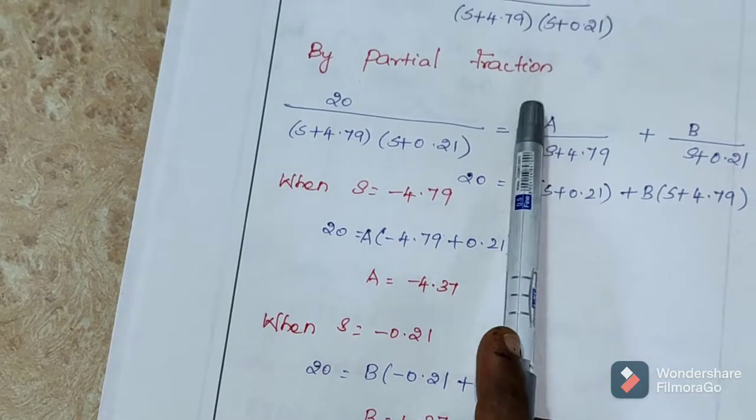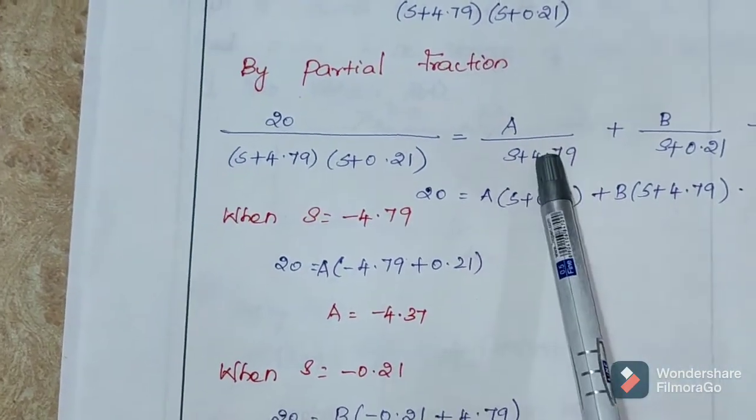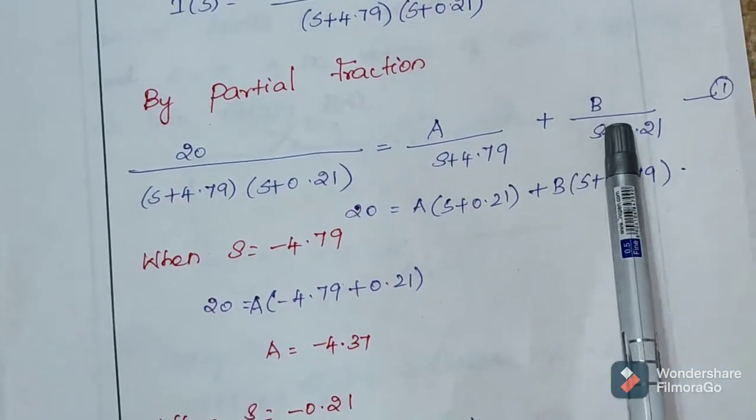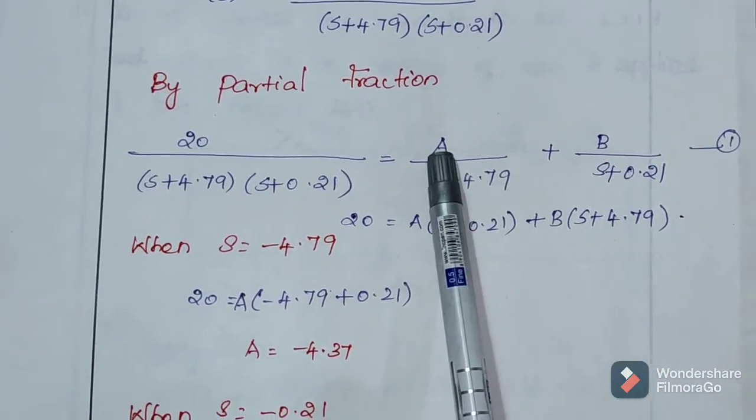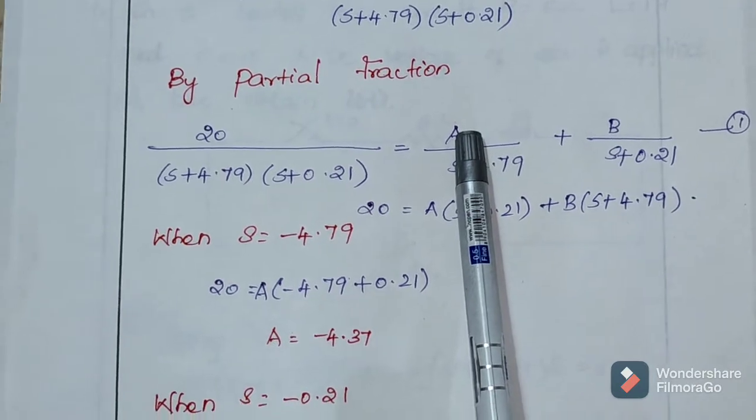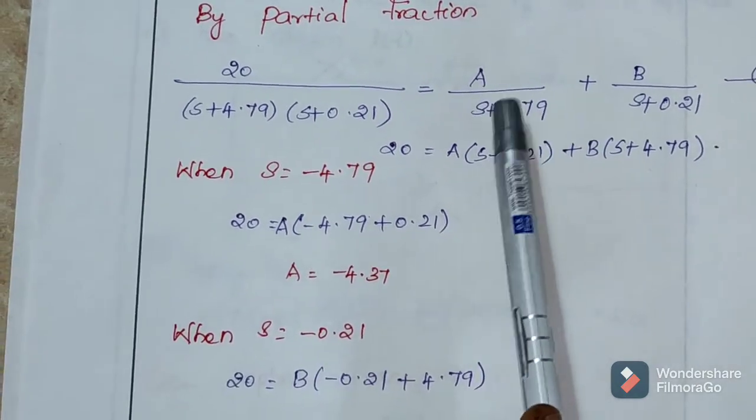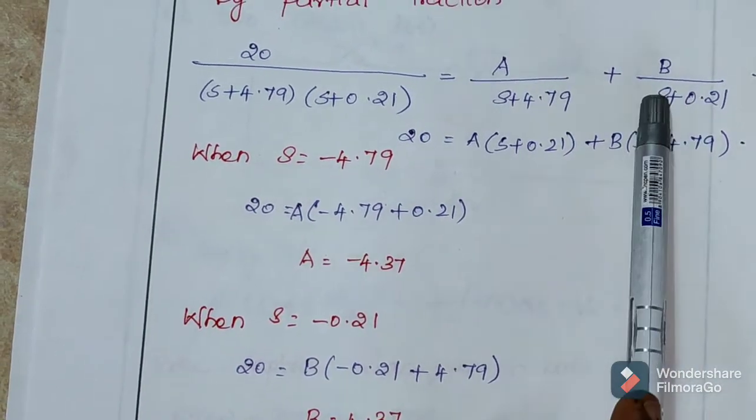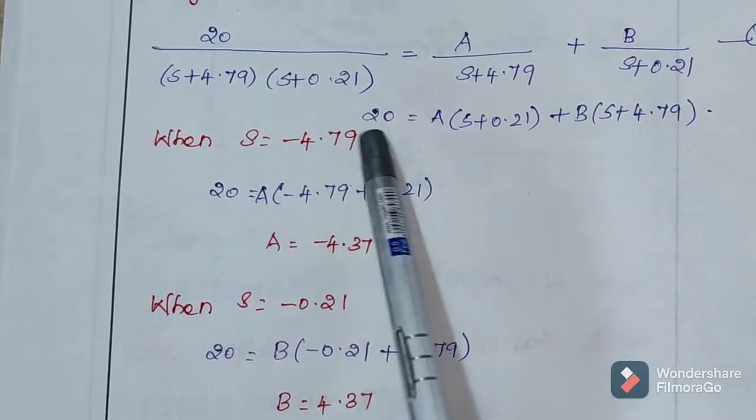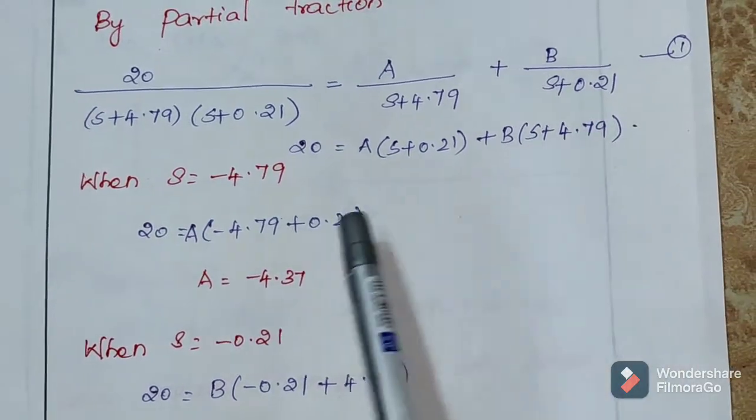Partial fraction: A by s plus 4.79 plus B by s plus 0.21. Consider this is equation number 1. Now, take LCM. LCM: A into s plus 0.21 plus B into s plus 4.79, whole divided by these two terms. On the denominator, the denominator cancels. So, 20 is equal to this one.